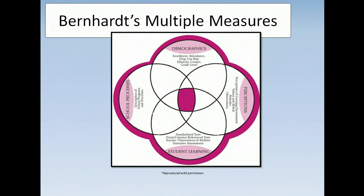As we explore transitions as they apply to school and students' experiences, it's important to bring in an idea from a prior KTO professional development session: that data comes from more than just student assessment. Looking at Bernhardt's multiple measures graphic, we have data from demographic, school perceptions, student learning and assessment, and school processes. As you think about transitions in your building, use these different buckets to see what you have and what you need before you start making any transition plans.